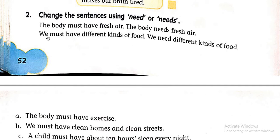Let's see the second example. 'We must have different kinds of food' becomes 'We need different kinds of food.' Again, in the place of 'must have' we have used 'need'. Now I will explain how to decide when to use 'need' and when to use 'needs'. Please listen attentively.